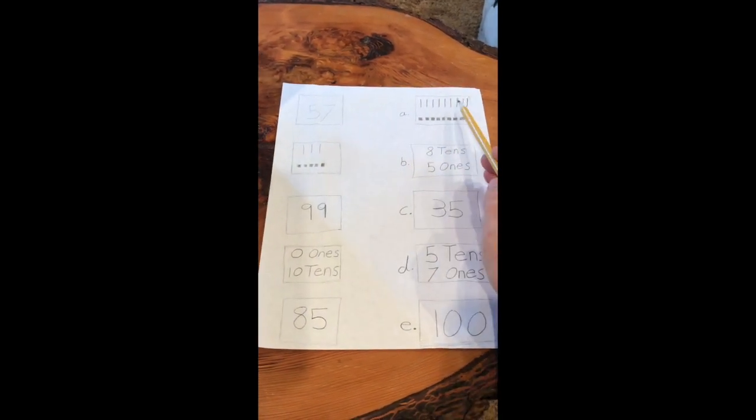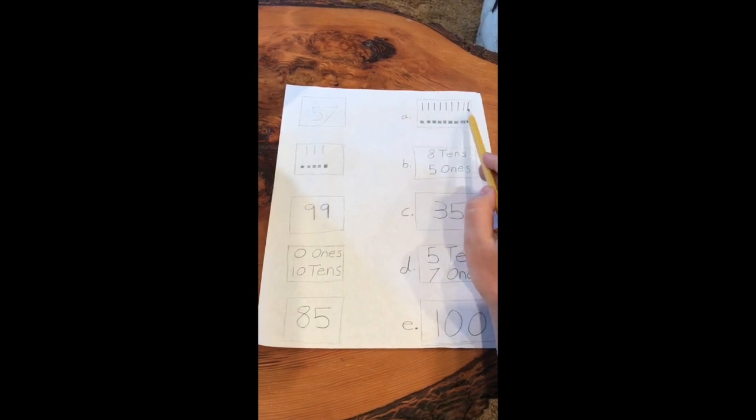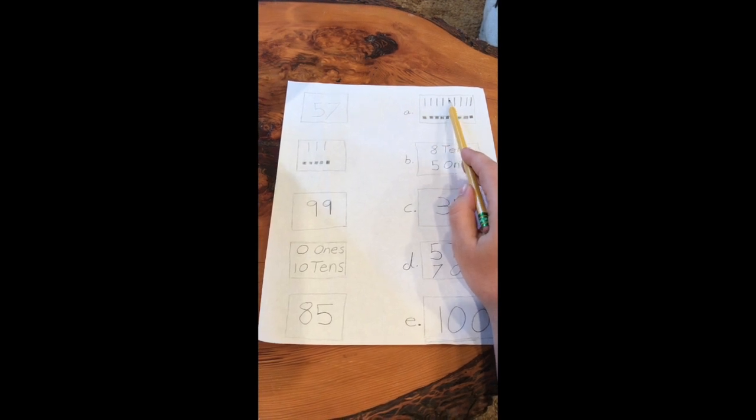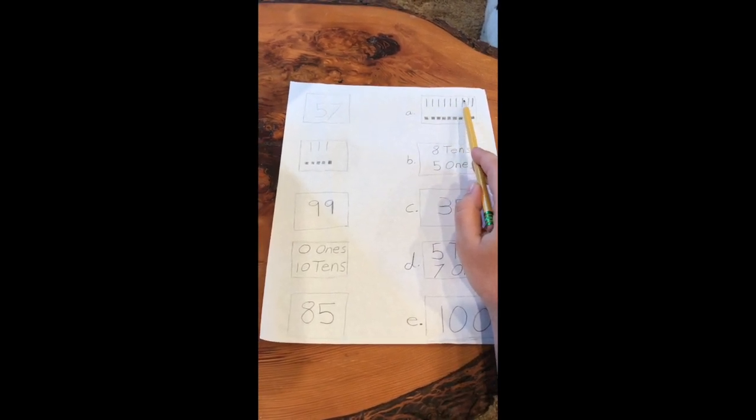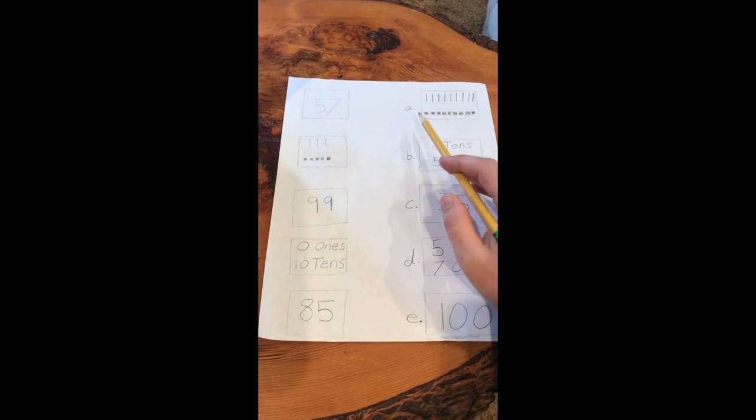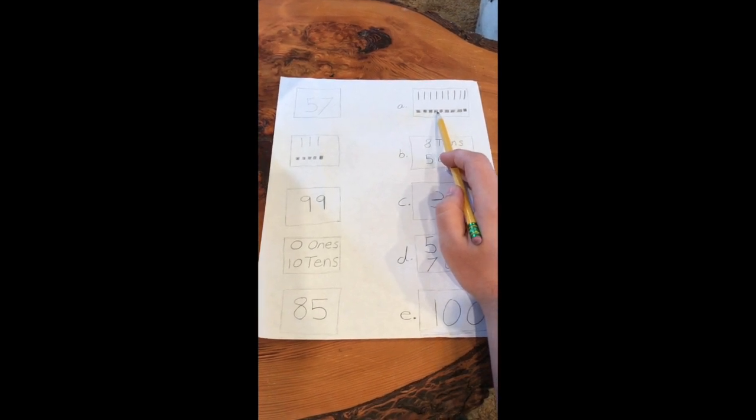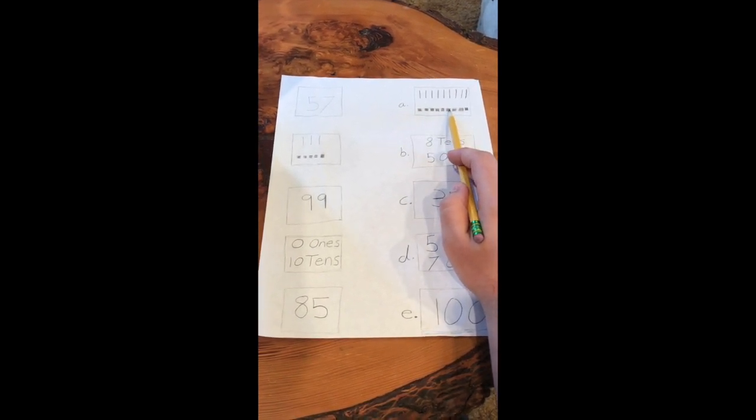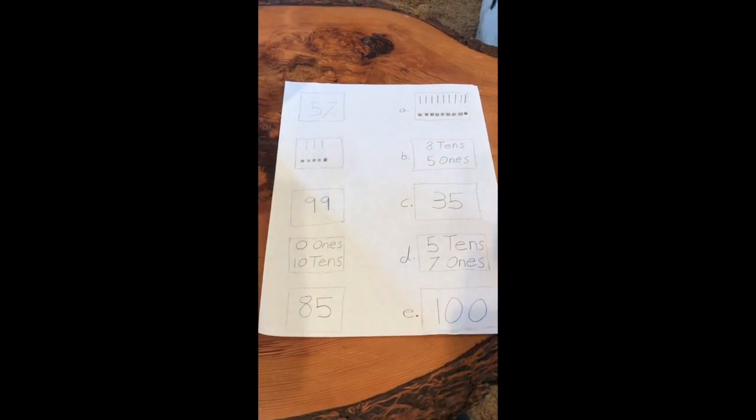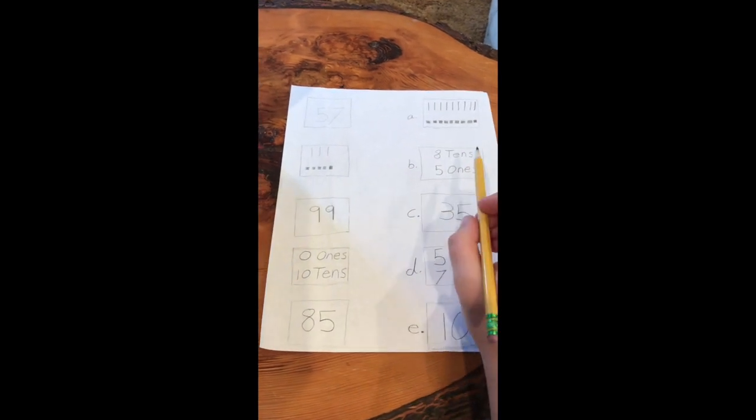First I'm gonna go over to A and count. Remember, the line represents a 10. So we're gonna go 10, 20, 30, 40, 50, 60, 70, 80, 90. Now we have to do the ones: 91, 92, 93, 94, 95, 96, 97, 98, 99. Well, 99 is not 57. So we're gonna go to the next one.